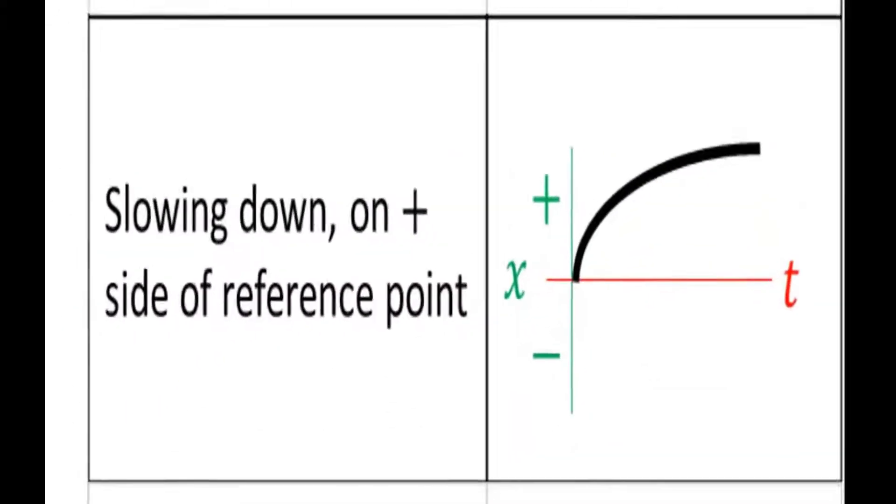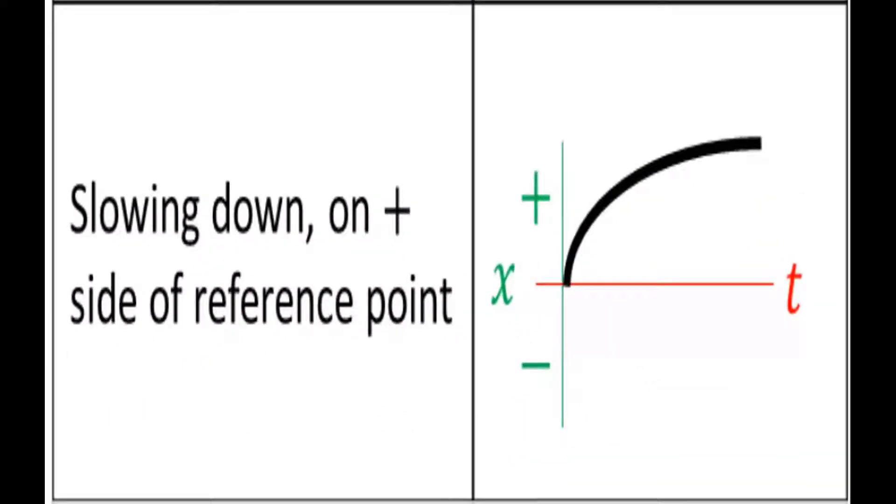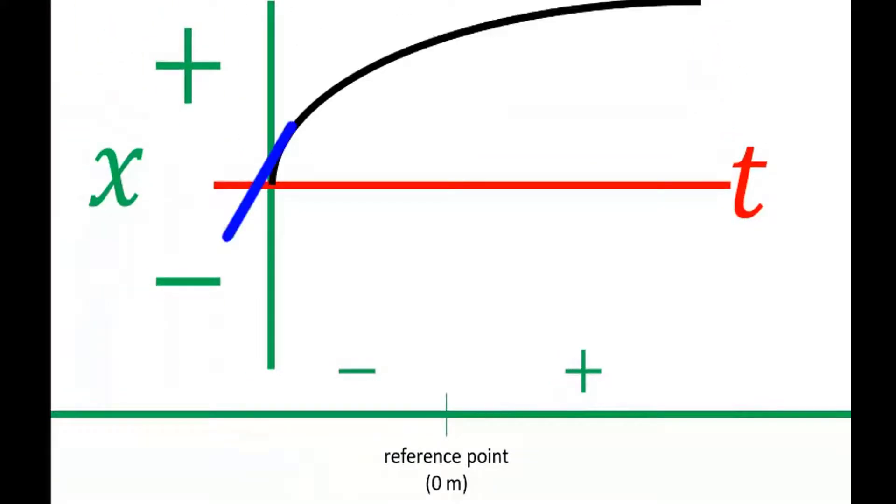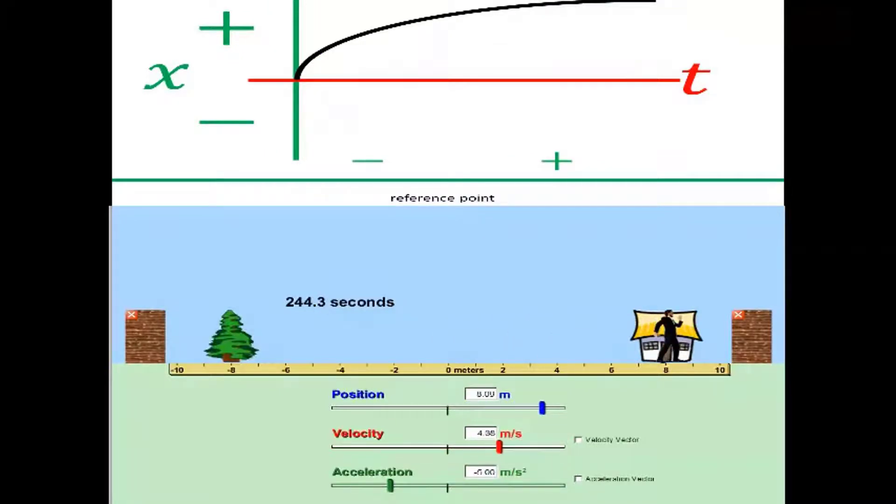In this example, the man is also going to only be on the right-hand side of the reference. But when we start observing him, he's already going quickly. The gradient here is steep. The velocity is fast. And then he's going to go slower and slower until he stops. And that is what happens.